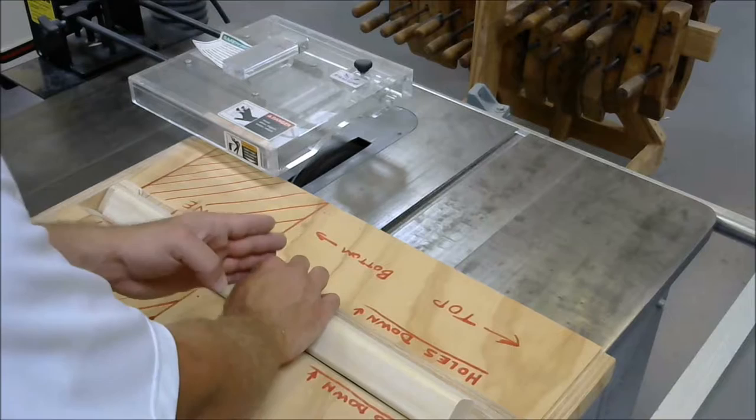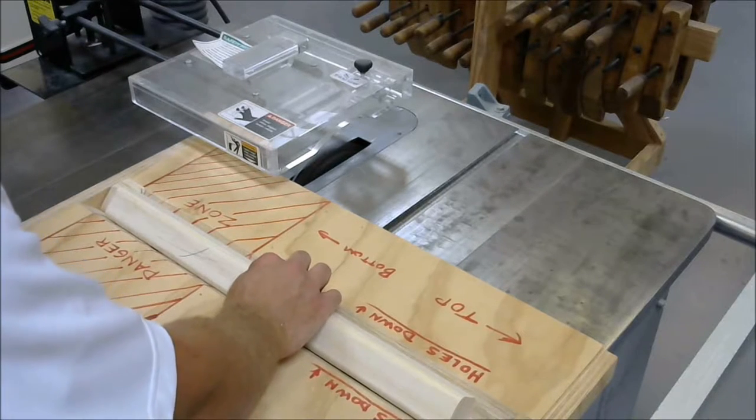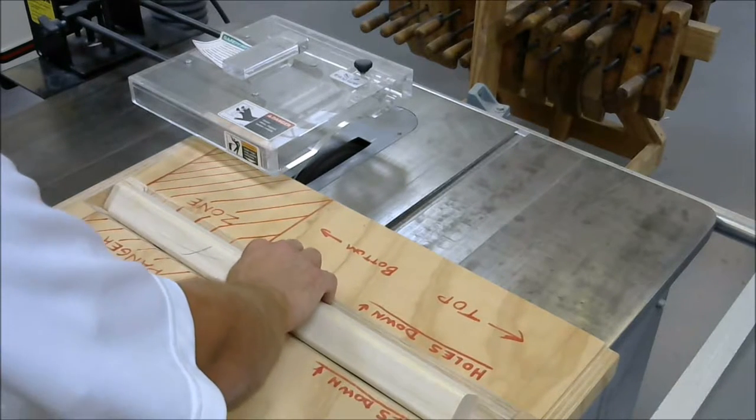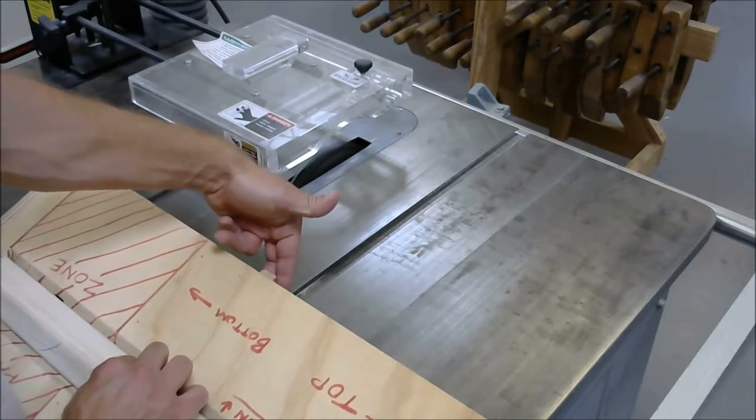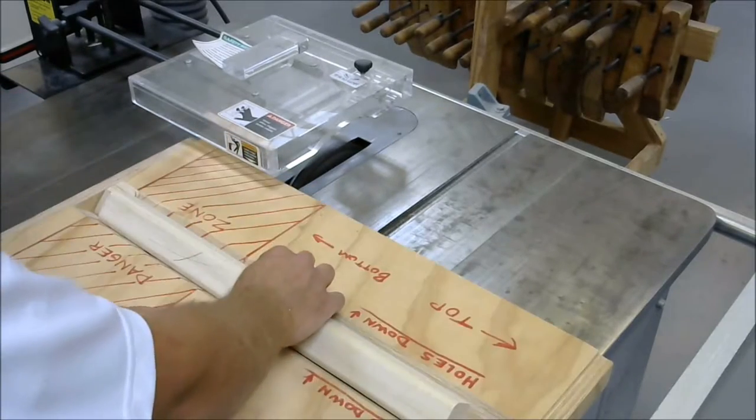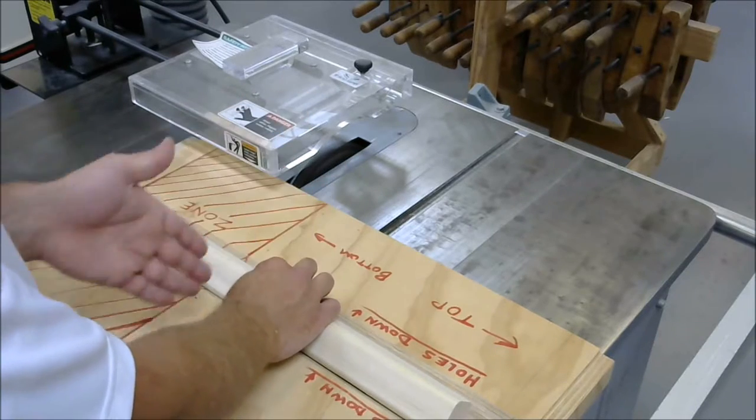Number two, your right hand needs to be holding this down so it doesn't pop up when the cut starts. Number three, there's a board on the bottom of this jig that controls where it goes. I need to make sure that I'm pushing straight in line with that.